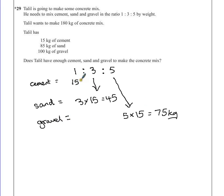So we now have 15 kilograms of cement, which is what he has. So that's the most he could possibly put for his cement. Which means to keep the same ratio of 1 to 3 to 5, he needs 45 kilograms of sand and 75 kilograms of gravel. Now that would keep the ratio together.